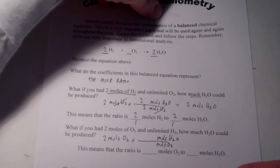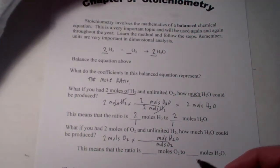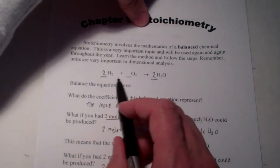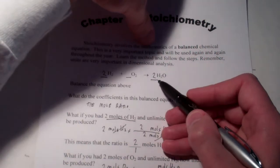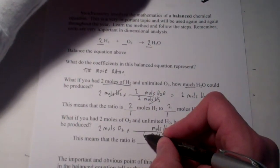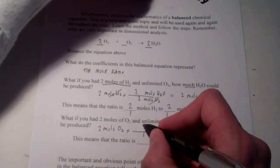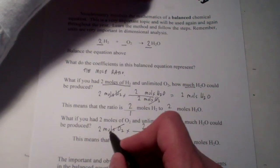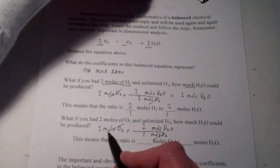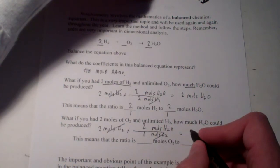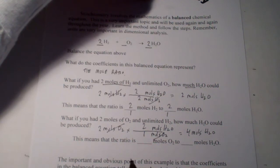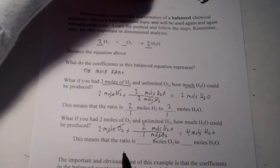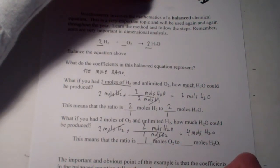Now, that ratio is not two to two. If you look at the equation above, we have one mole of oxygen makes two moles of water. So, one mole of oxygen makes two moles of water. Moles of oxygen divide out. Two times two divided by one is four moles of water. This means that the ratio is one mole of oxygen to two moles of water.